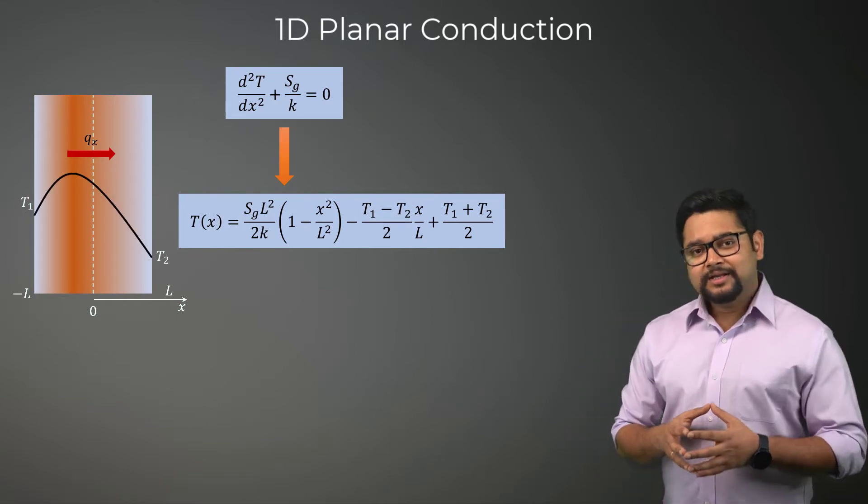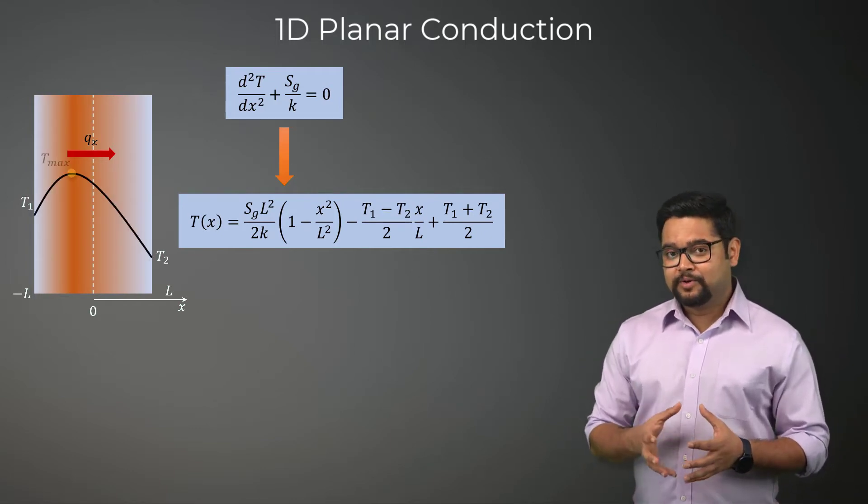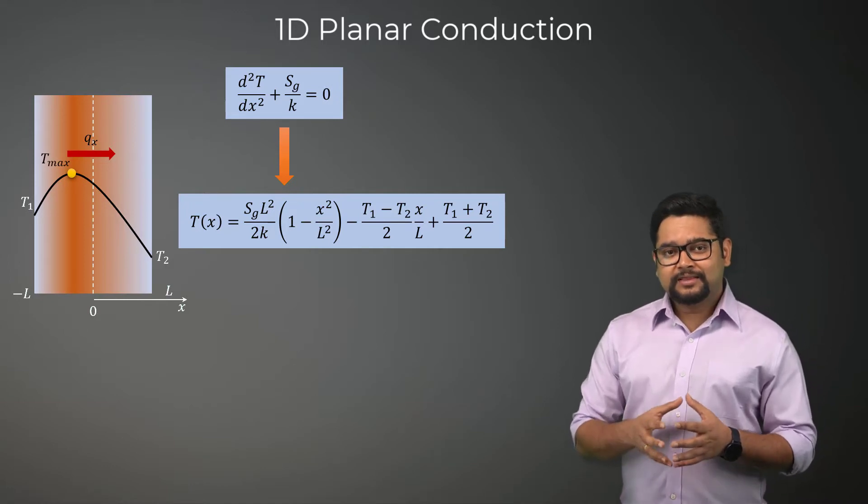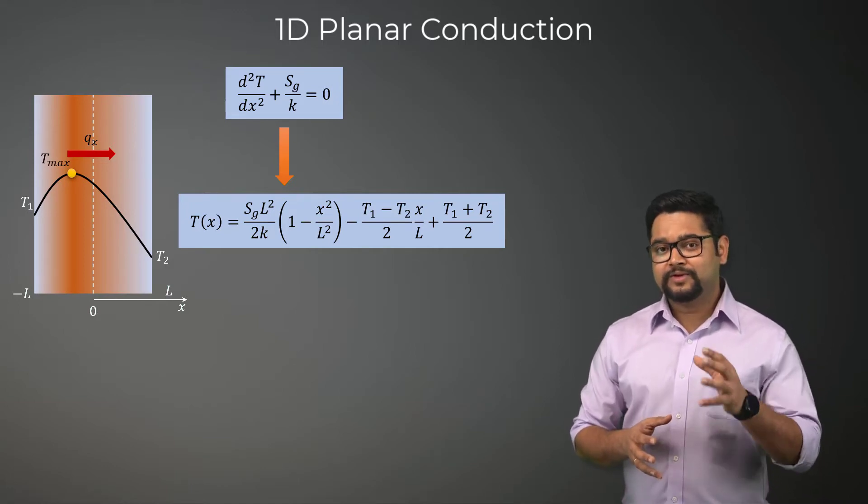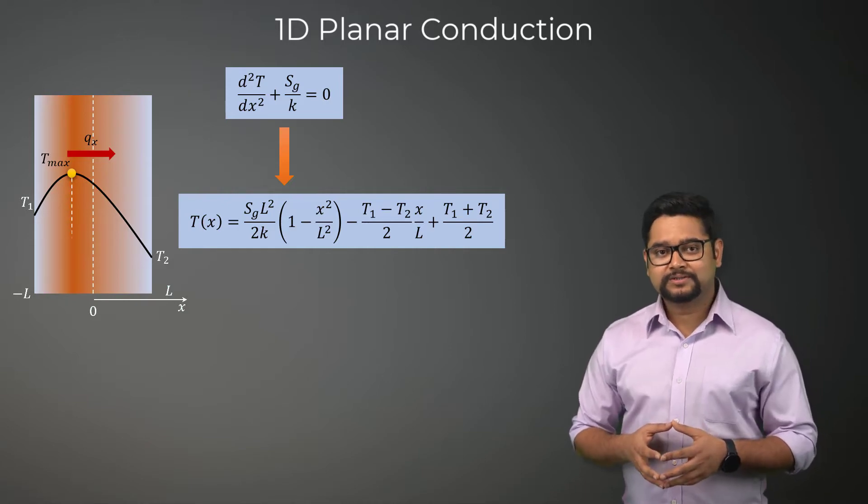As you can see, the temperature distribution is parabolic instead of linear and the temperature reaches its peak within the valve at the location corresponding to this.